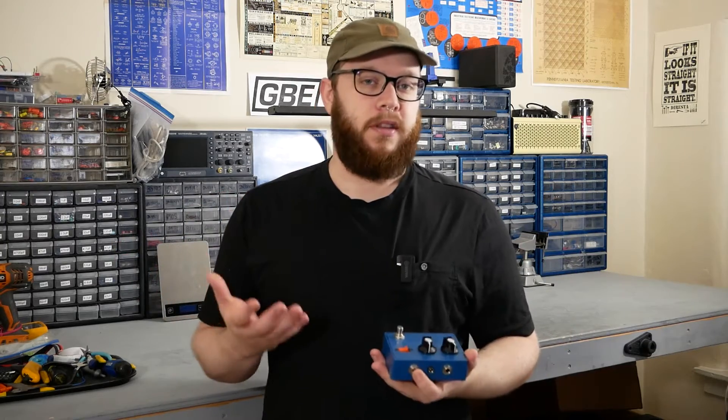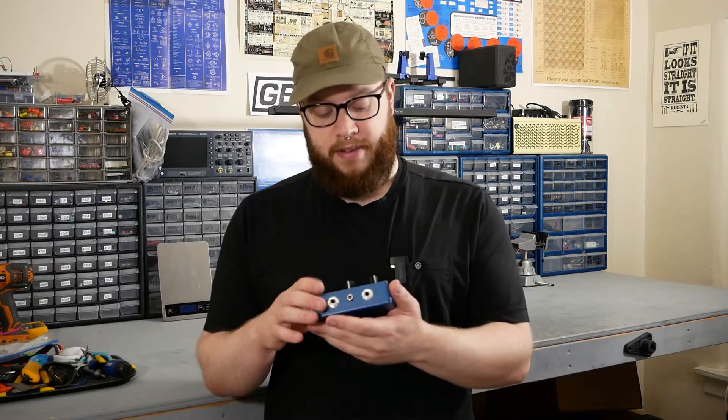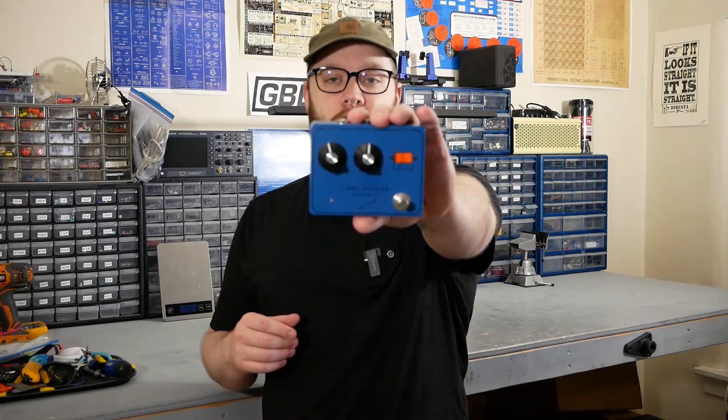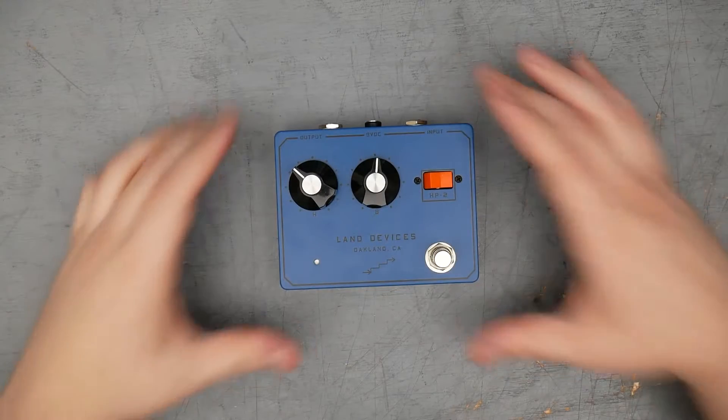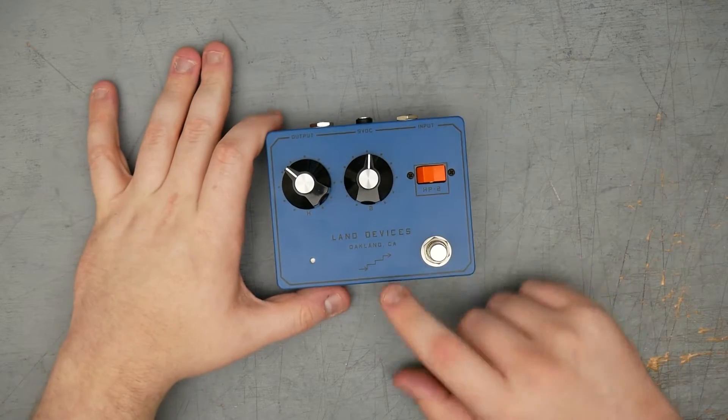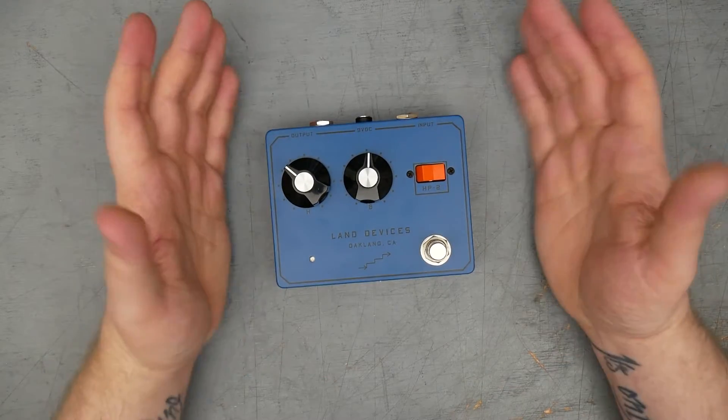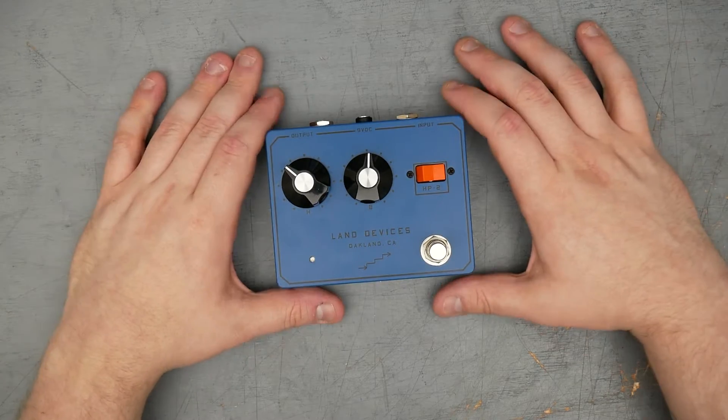Hey, this is Joe of Greybench Electronics. Welcome back to the Pedal Tear Down Series, where I take apart new and interesting pedals and show you what's going on inside. Today we have the Land Devices HP-2. On the bench today is the Land Devices HP-2, made in Oakland, California. So this is a clone of the famous or infamous boutique pedal, the Harmonic Percolator.